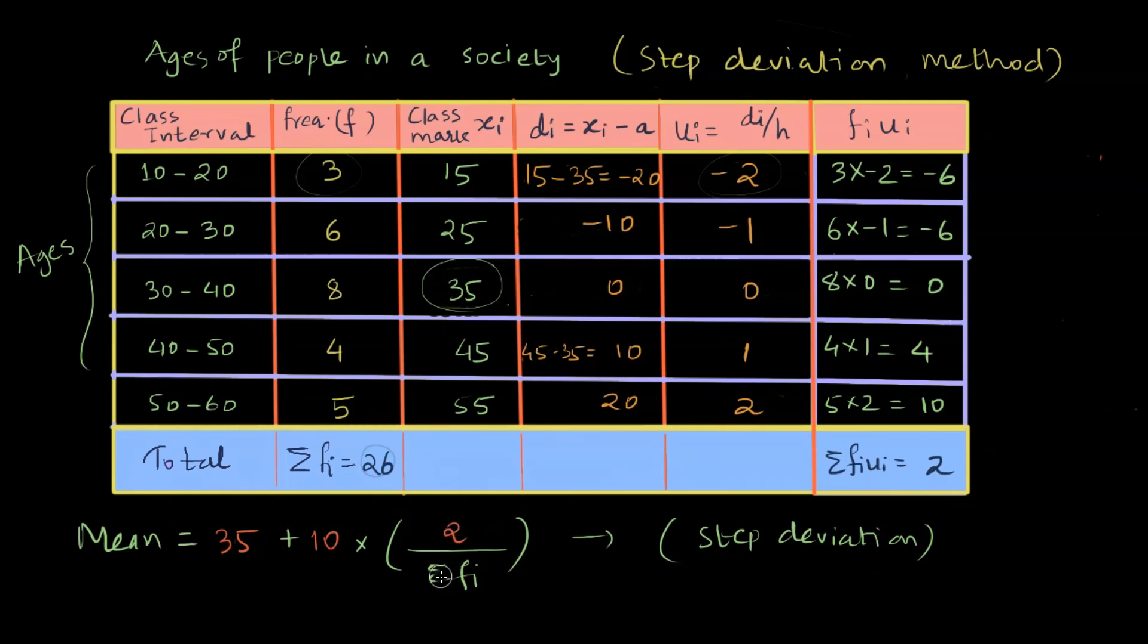In the numerator, summation fiui we already found out is 2. And in the denominator, summation fi is 26. Once we simplify this, we find that it's 35 plus 10 times 1 by 13, which is 35 plus 10 by 13, which equals 35.77.